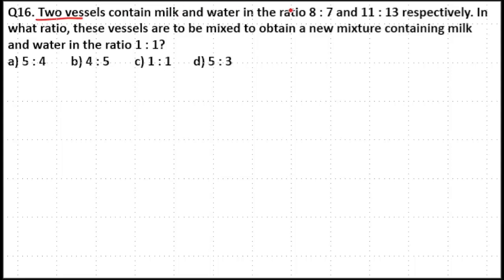Two vessels contain milk and water in the ratio 8:7 and 11:13 respectively. In what ratio should these vessels be mixed to obtain a new mixture containing milk and water in the ratio 1:1? This is an allegation problem.